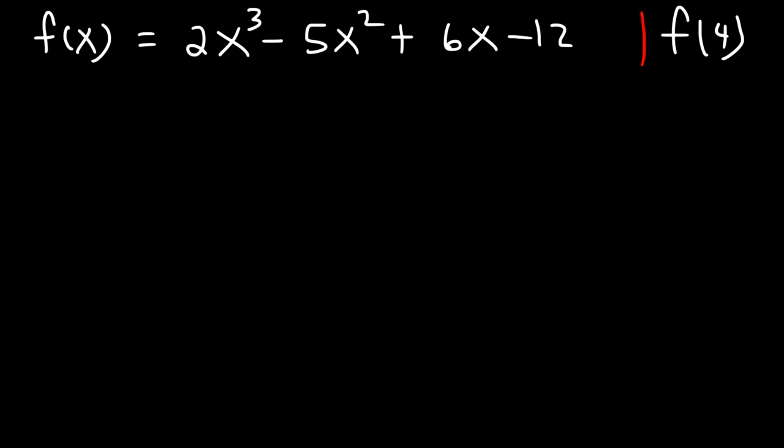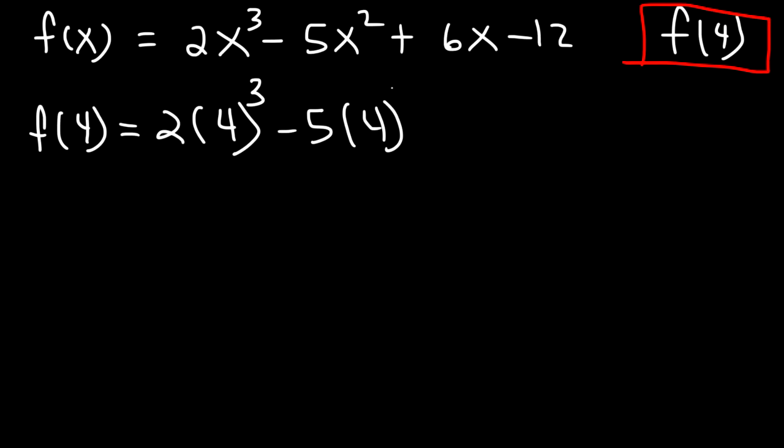So let's say we have a polynomial function f of x. Let's say that f of x is equal to 2x cubed minus 5x squared plus 6x minus 12. And the problem wants you to evaluate f of 4. So evaluate the function when x is equal to 4. Now there's two ways we can get the answer. We can do it the old-fashioned way, simply plug in 4 into the equation, or we can use synthetic division. Let's plug in 4 first and see what answer we're going to get. So let's replace x with 4. So this is going to be 2 times 4 raised to the third power minus 5 times 4 squared plus 6 times 4 minus 12.